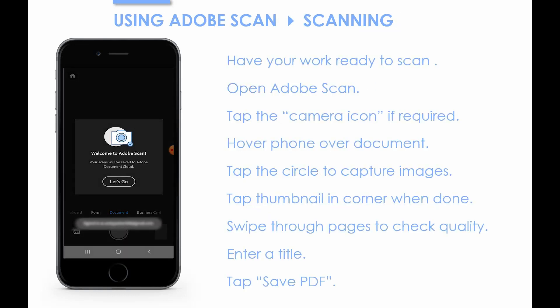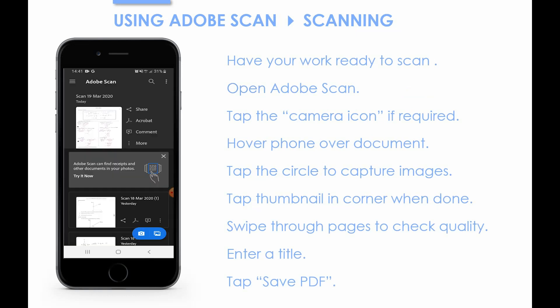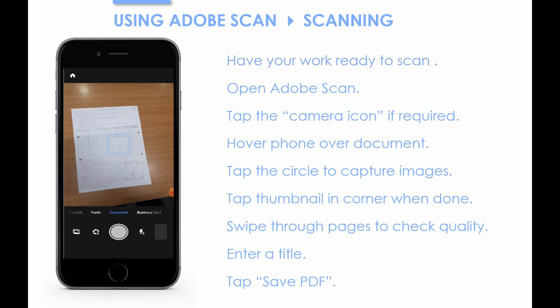Next up, we're ready to scan. Sometimes when you load the app, it will go straight to the camera. However, at the moment we're on the main menu — we need to click the blue camera icon in the bottom right corner. Before you start though, make sure you've got some work ready to scan. Now we'll move on to scanning.